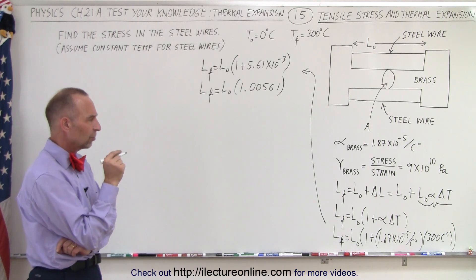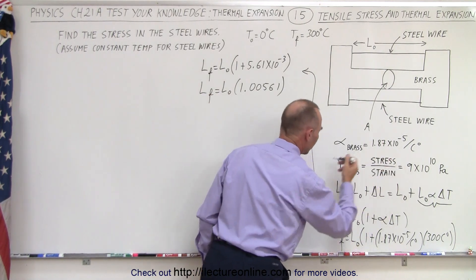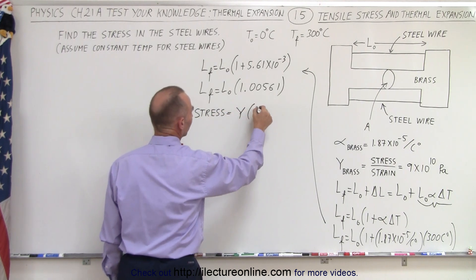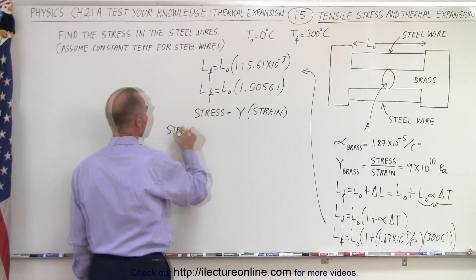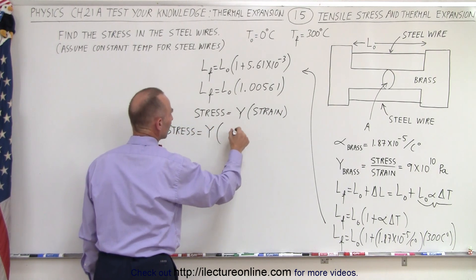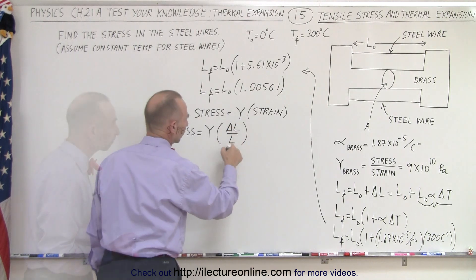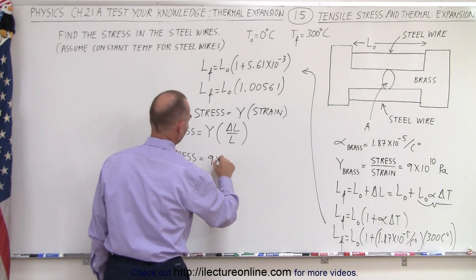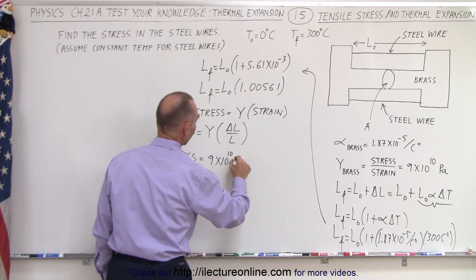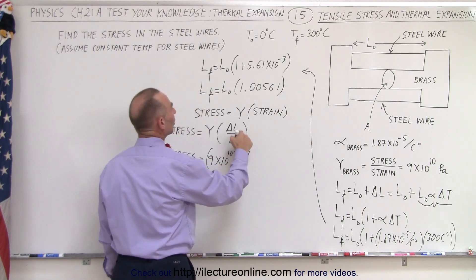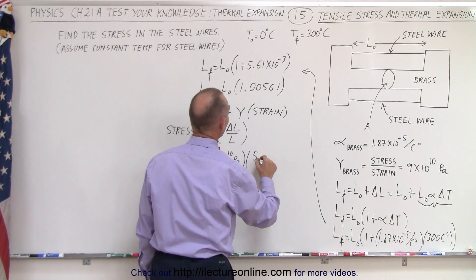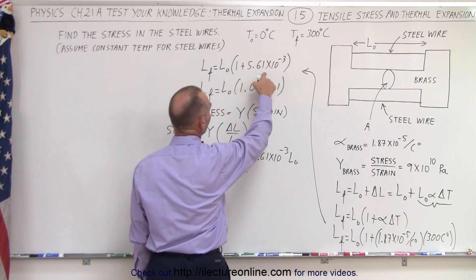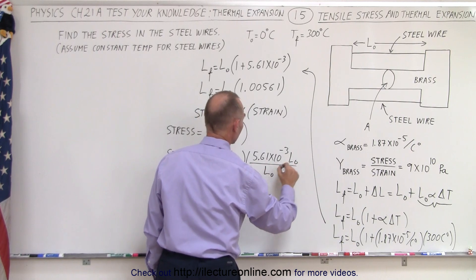Now let's try to find the stress because notice from this equation right here, we can now write that the stress is equal to the Young's modulus times the strain. And so the stress is equal to Young's modulus and the strain by definition is the change in length over the original length. Okay, so then we can say that the stress is equal to 9 times 10 to the 10th Pascals multiplied times the change in the length. The change in the length would be 5.61 times 10 to the minus 3 times the length initial, because we have to multiply this times this to get the change in length, divided by the original L initial.